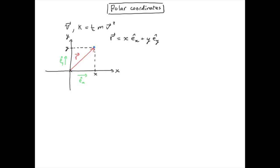By definition, the velocity vector is the time derivative of the position vector. And then in Cartesian coordinates, its expression simply becomes the time derivatives of x and y.